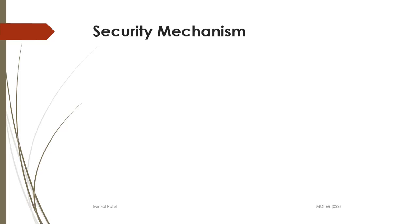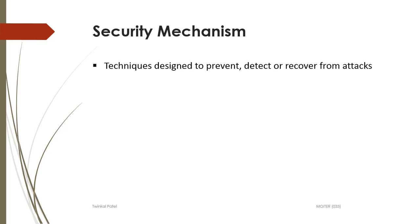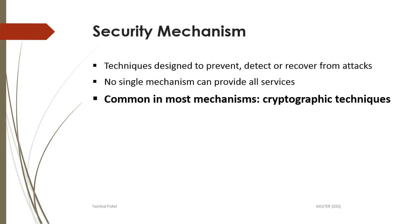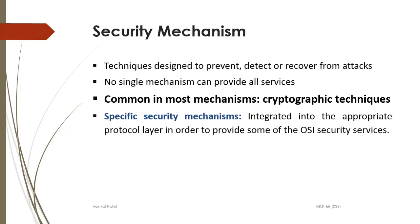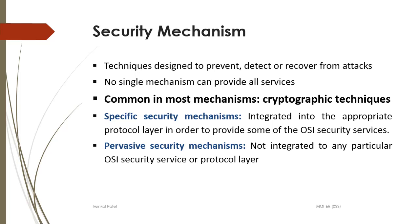Our next topic is security mechanisms. Security mechanisms are designed to prevent, detect, or recover from attacks. There are different types of security mechanisms, but no single mechanism can provide all the services. Security mechanisms mostly use cryptographic techniques. There are two types: specific security mechanisms, which provide security to a specific protocol layer, and pervasive security mechanisms, which are not indicated to any particular OSI security layer.